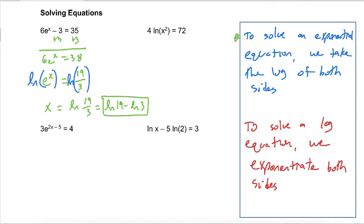For number 4, sorry, it's not number 4, it just starts with a 4. 4 times the ln of x squared equals 72. Similarly to before, we're going to isolate the ln first. So I'll divide everything by 4. So the ln of x squared equals 72 divided by 4 is 18.